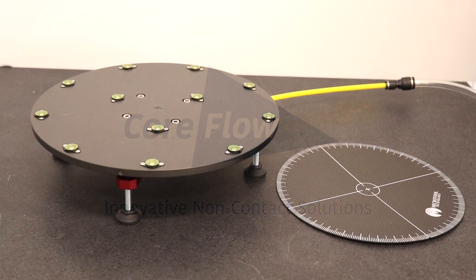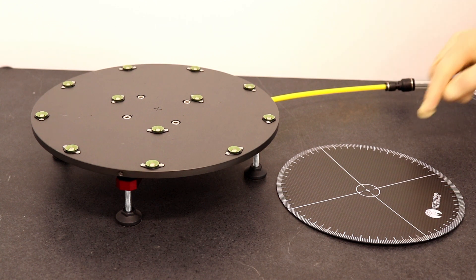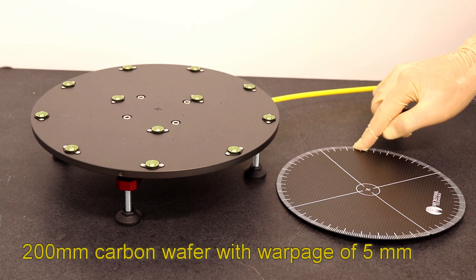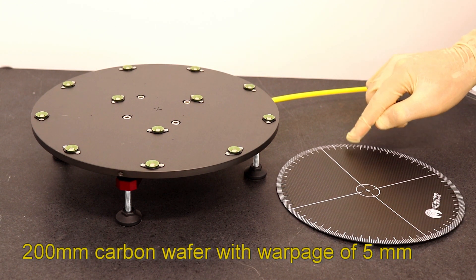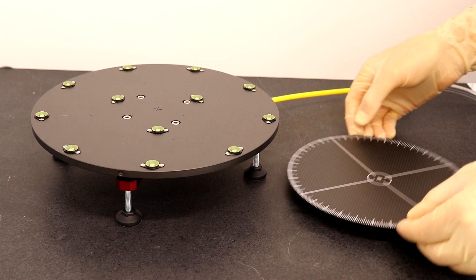CoreFlow Selective Vacuum Chucks use smart nozzle technology to allow use of wafers of various sizes on the same chuck. Here, we demonstrate how a chuck can grip a 200 mm diameter carbon wafer of 5 mm warpage.